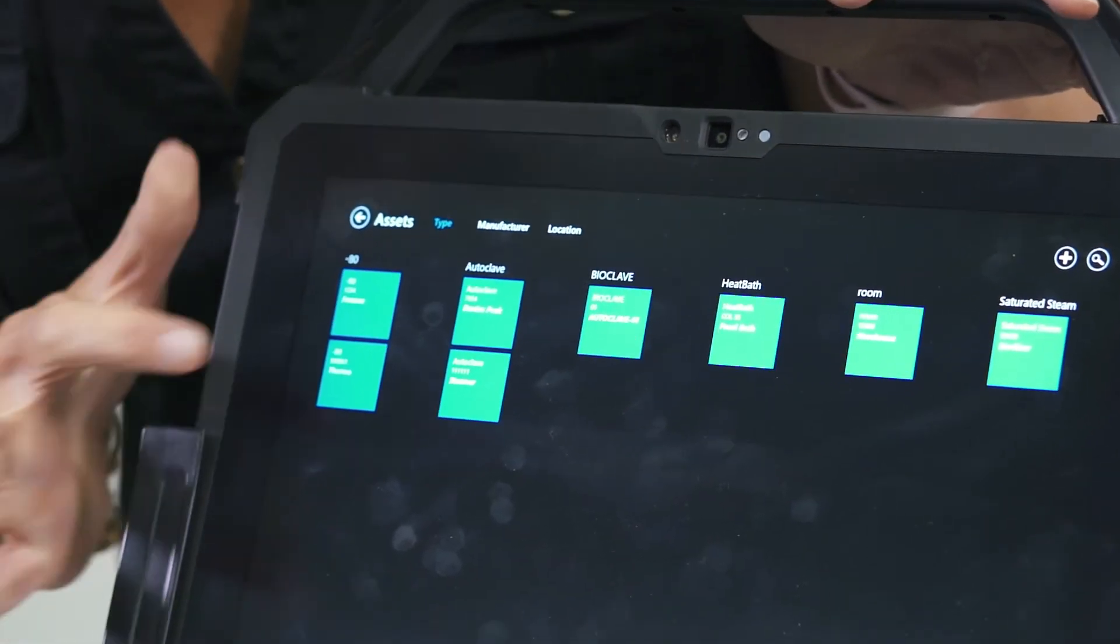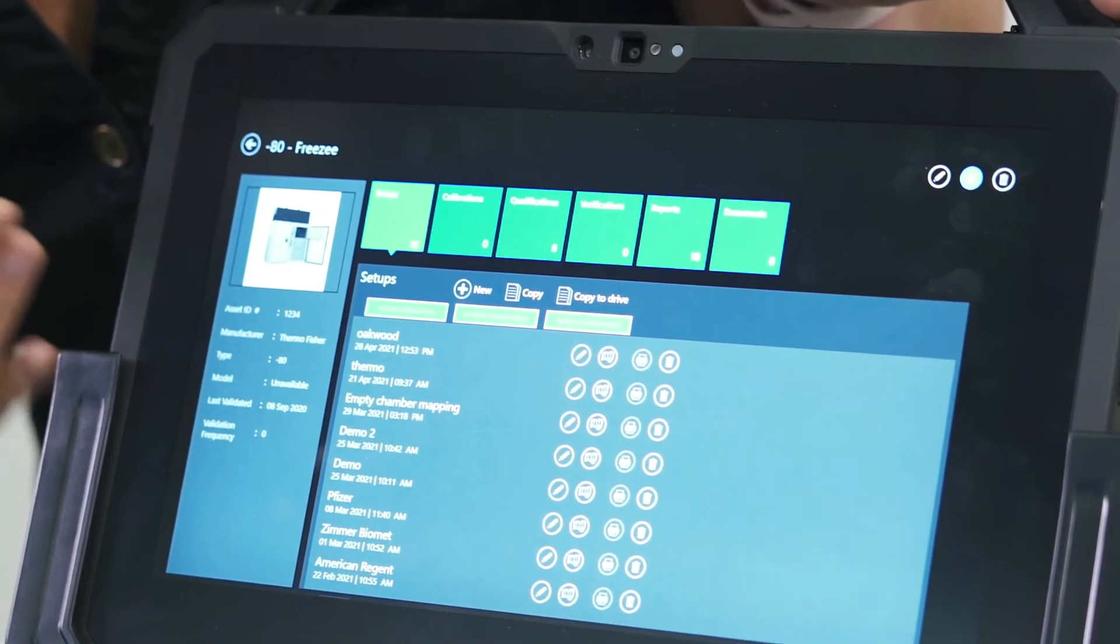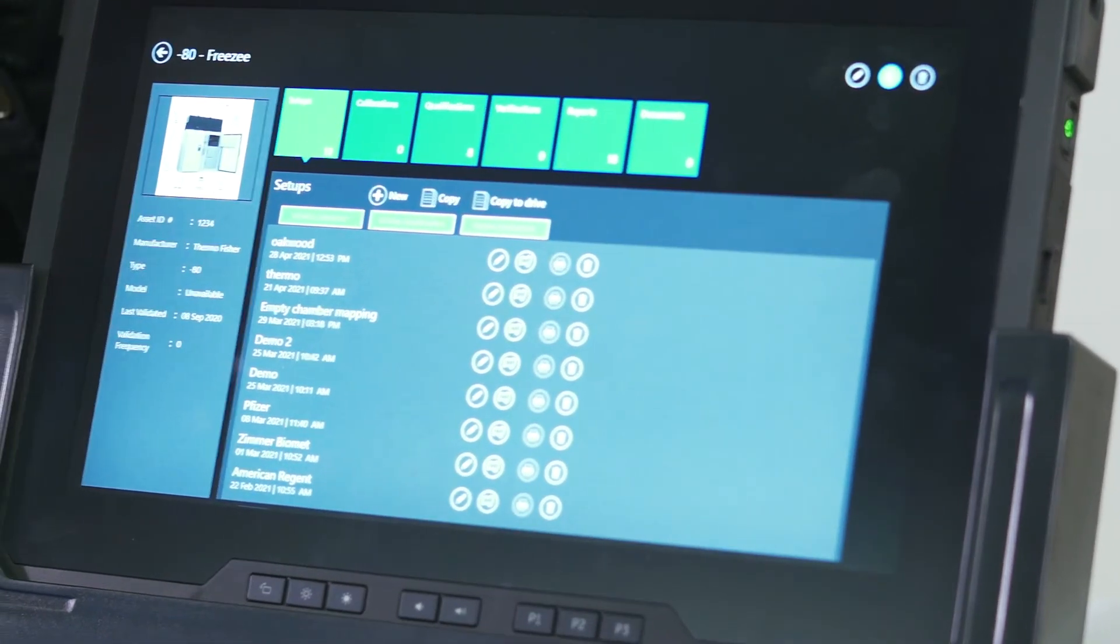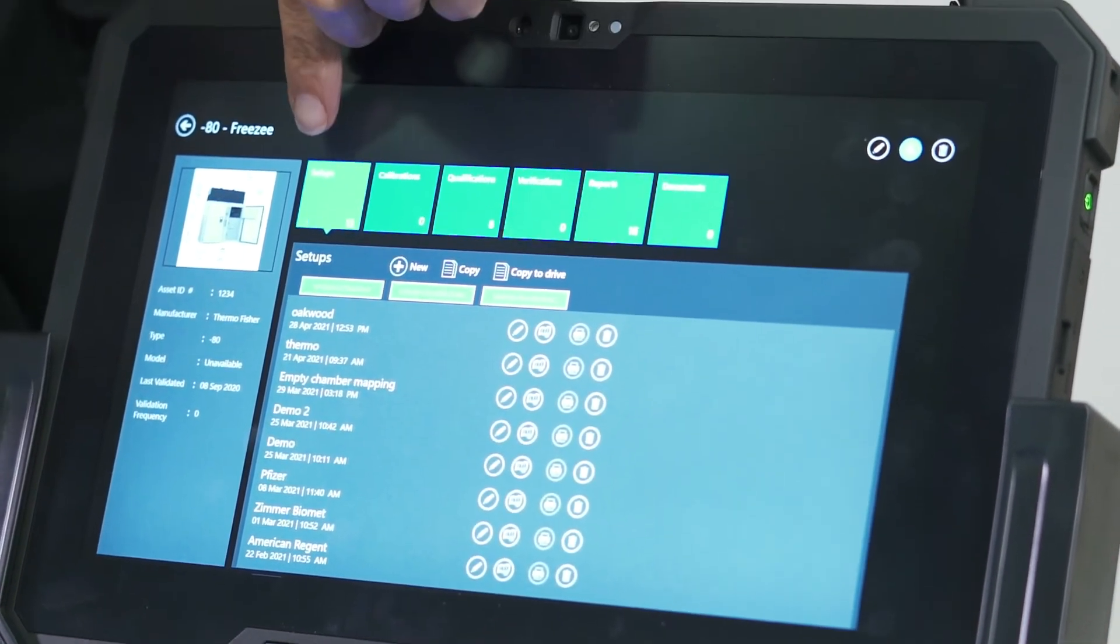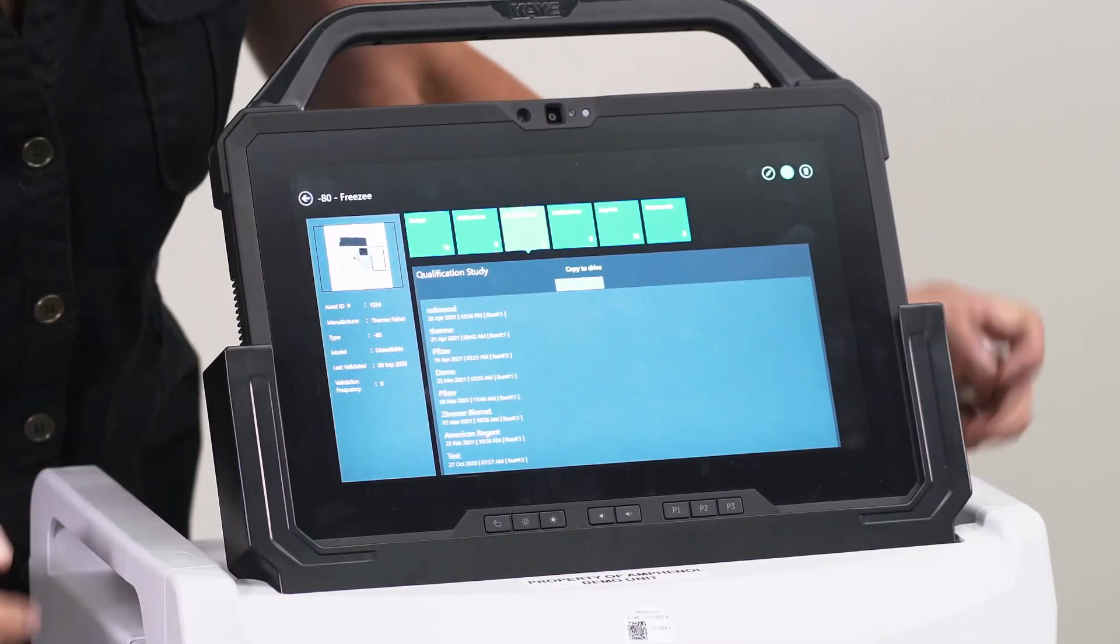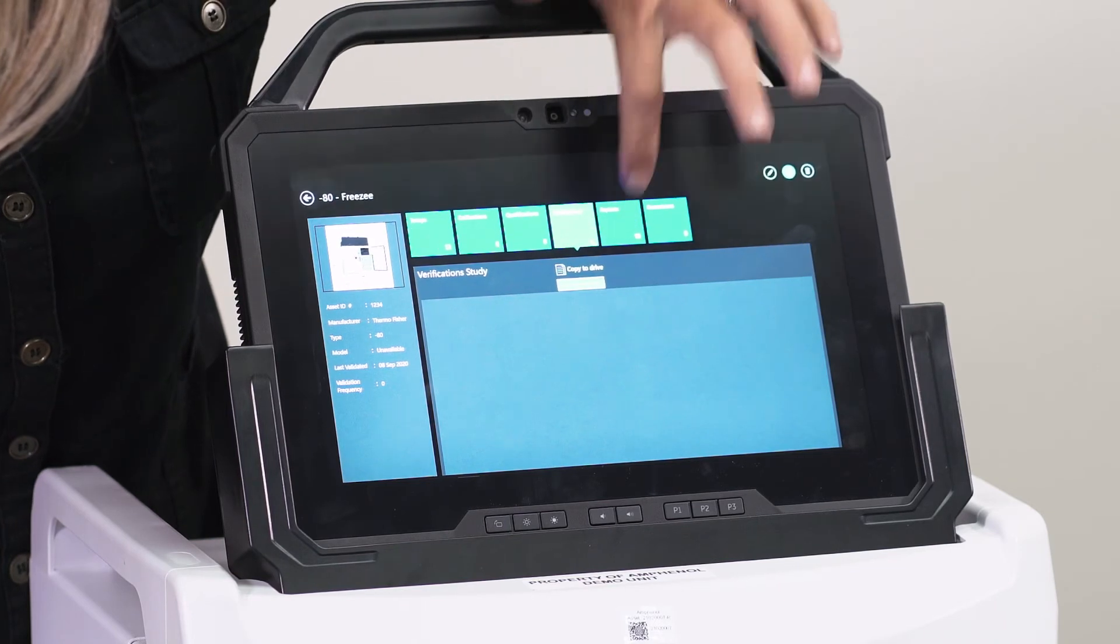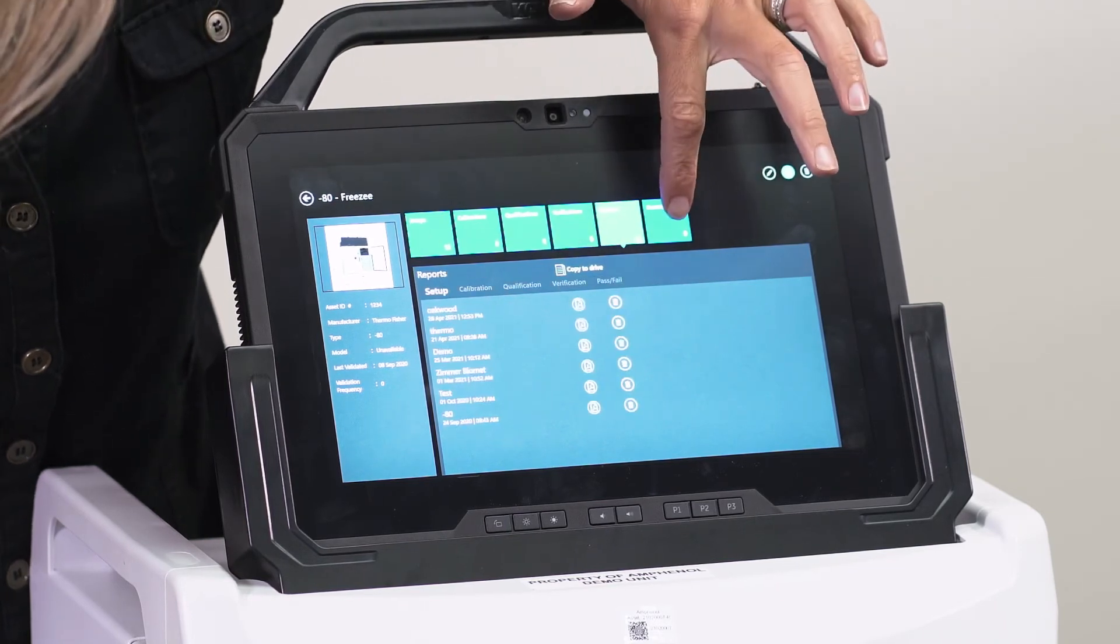So if I tap one of these, it now opens up and I have a picture of my asset, the asset information, and it stores all my setups, all my calibrations, qualifications, verifications, reports, and documents.